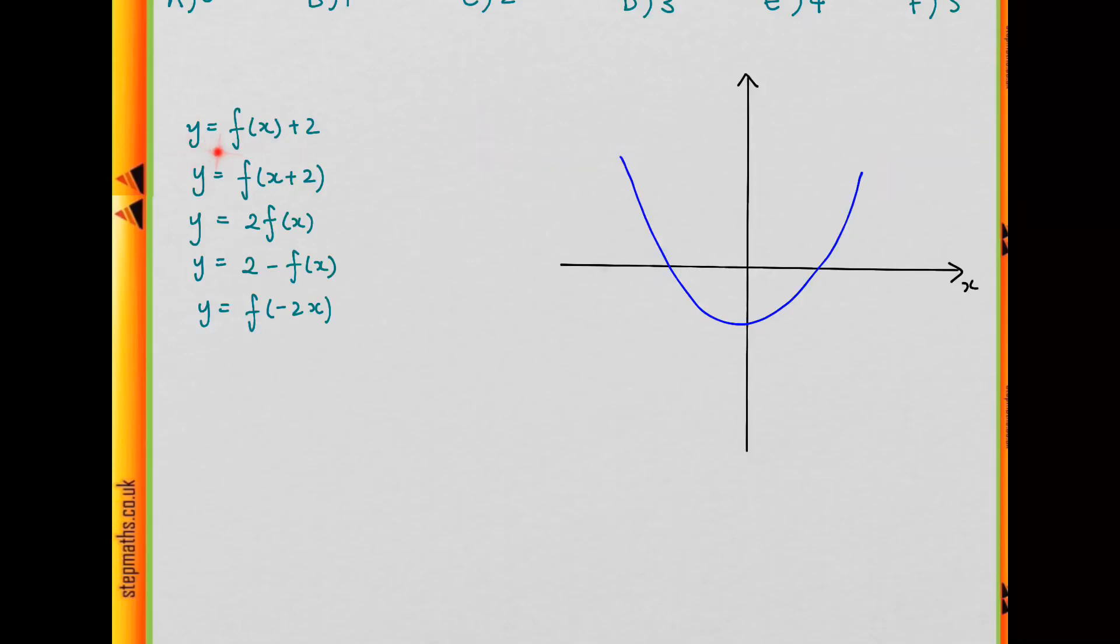For this first one, f(x) + 2, that's just this curve but moved up two places. If we move this up, depending on how the scaling is on the y-axis, we could easily move this up two places so that it was all above the x-axis and then it wouldn't cross anywhere. So this first one doesn't necessarily have to cross the x-axis.